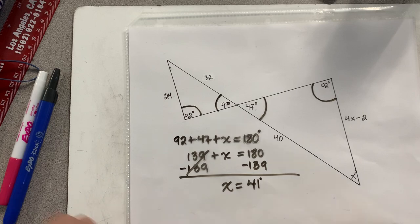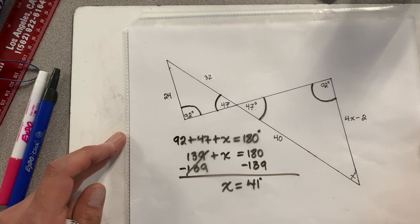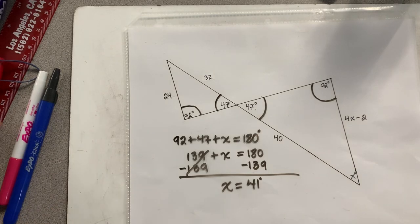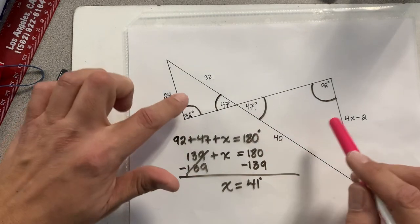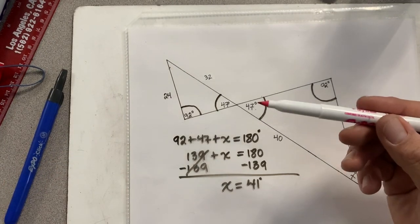Have I figured out the value of Y yet? Yes or no? No, not yet. So I've got to figure out the value of Y. To figure out the value of Y, since I know both triangles are similar, I have to highlight corresponding sides.